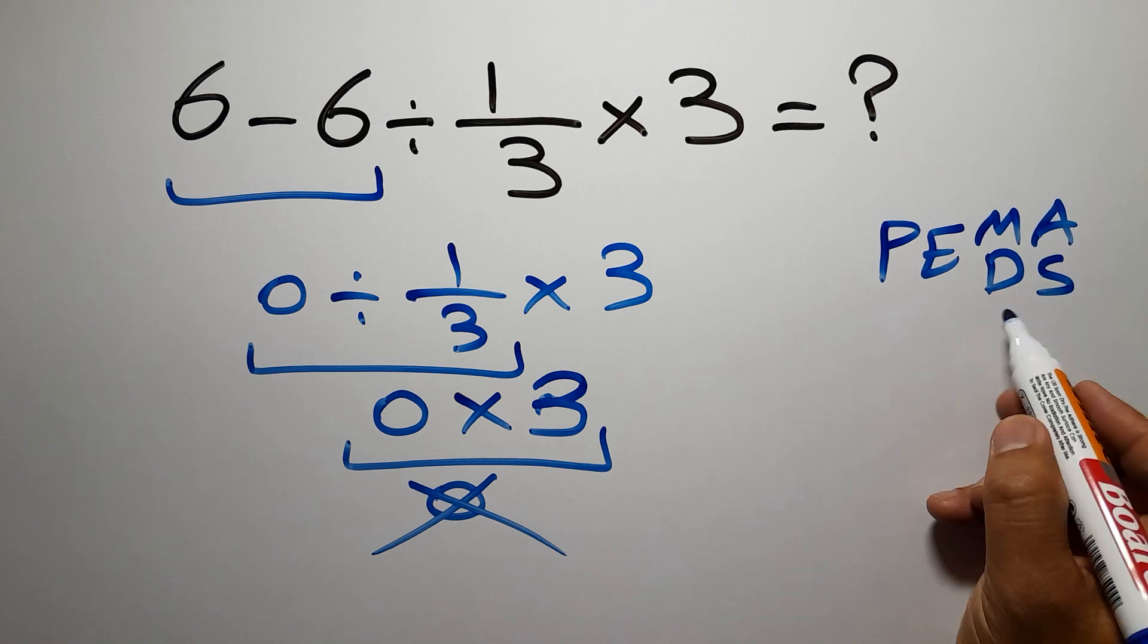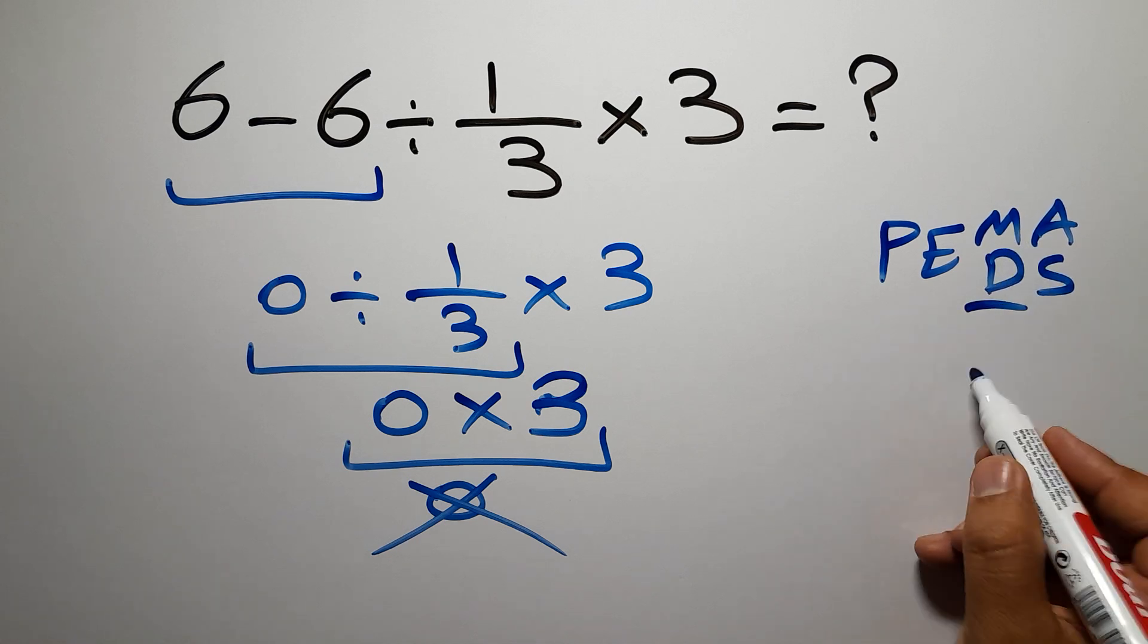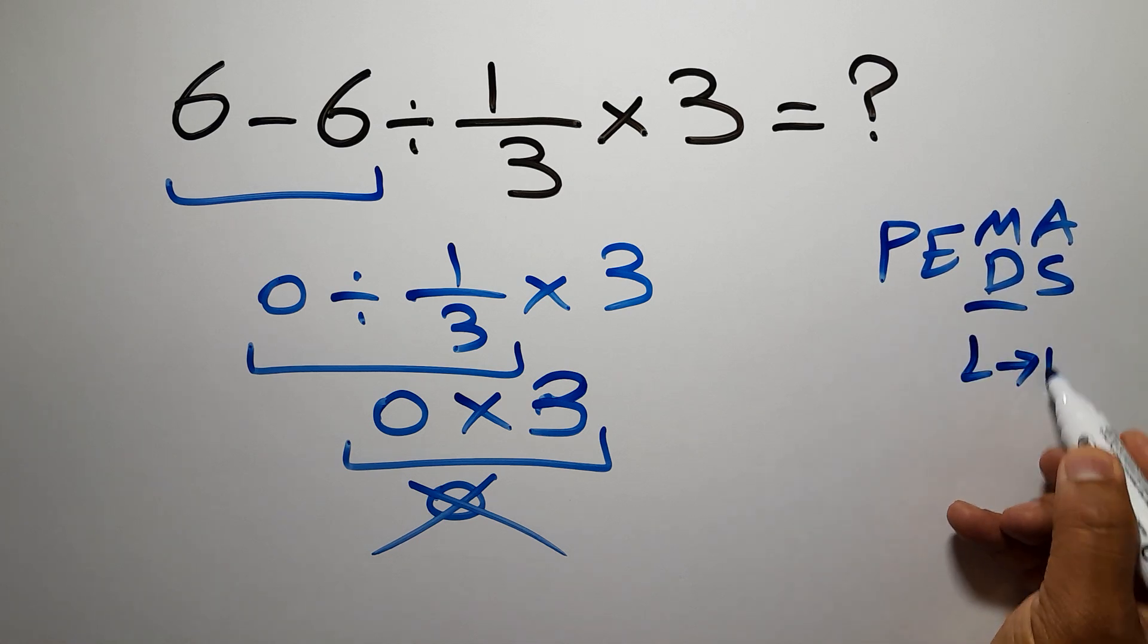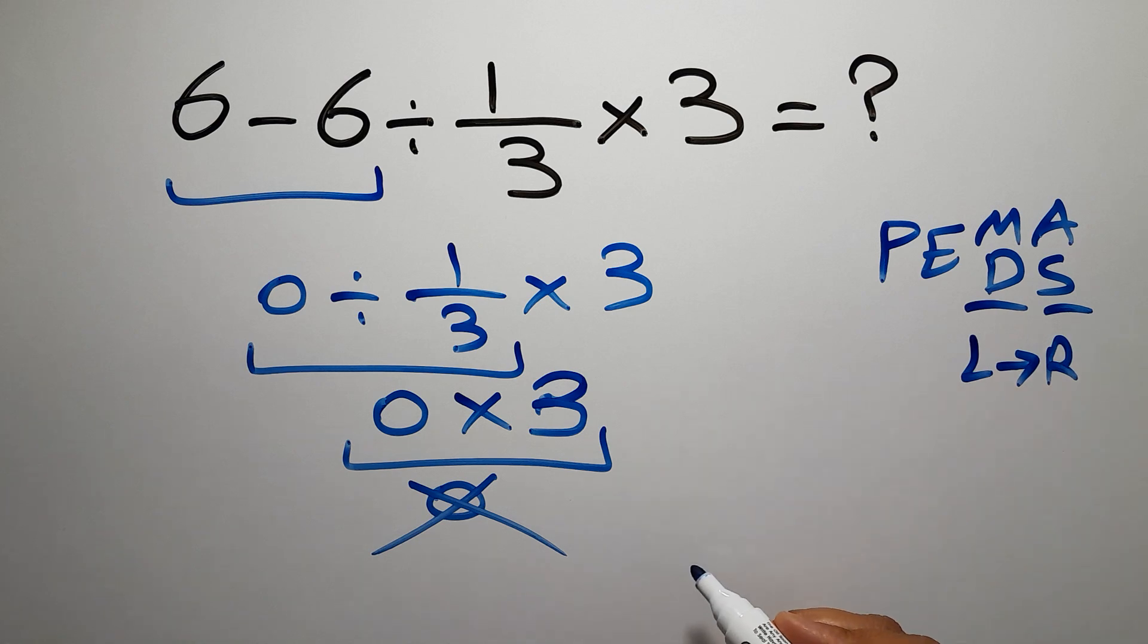and finally addition or subtraction. Remember that multiplication and division have equal priority, and we have to work from left to right, and the same applies to addition and subtraction.